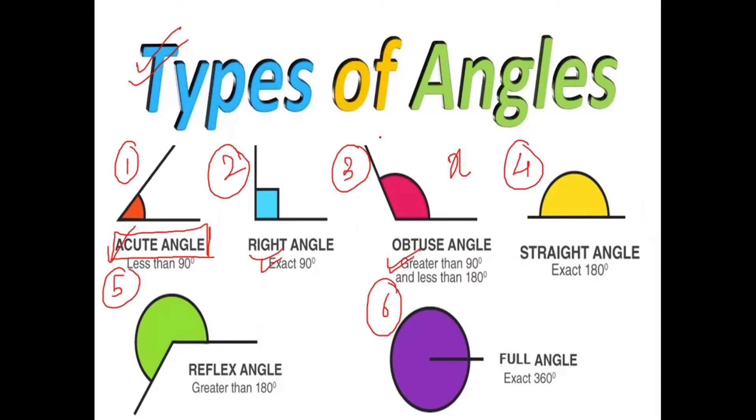Straight angle is exactly 180 degrees. So if we draw a straight line and I ask you which angle is present, you will say it is 180 degrees. Reflex angle is greater than 180 degrees and less than 360 degrees. Full angle is exactly 360 degrees. So if I draw this, the angle present in this figure is 360 degrees.